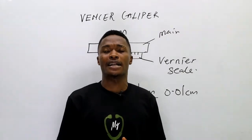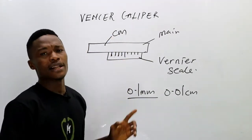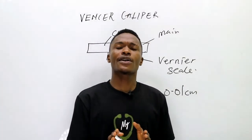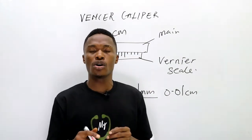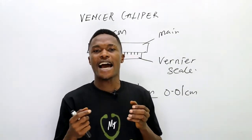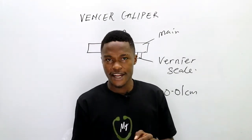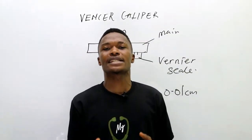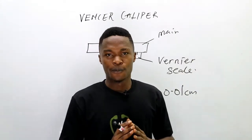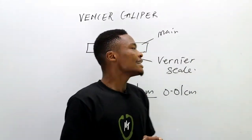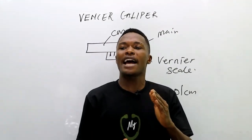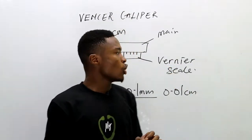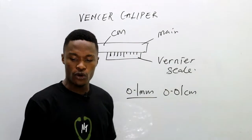To answer questions on the vernier caliper, follow three steps. Step one: take the reading on the main scale immediately before the vernier scale. Step two: take the reading on the vernier scale which coincides with the main scale. Step three: add the readings from steps one and two together.